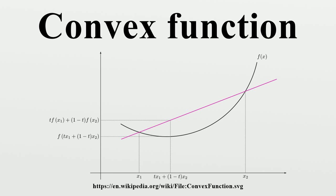Jensen's inequality applies to every convex function f. If x is a random variable taking values in the domain of f, then E[f(x)] ≥ f(E[x]). If a function f is convex and f(0) ≤ 0, then f is superadditive on the positive reals.